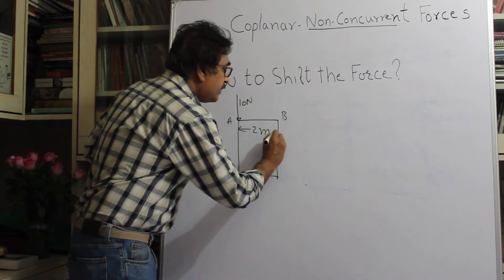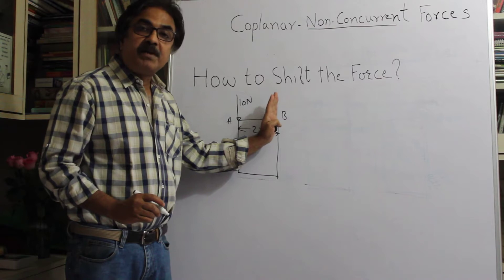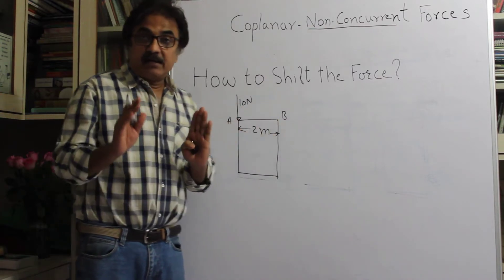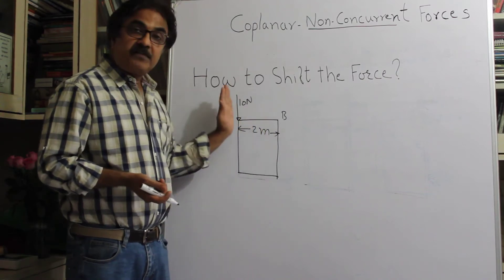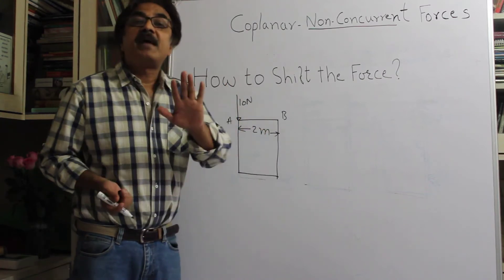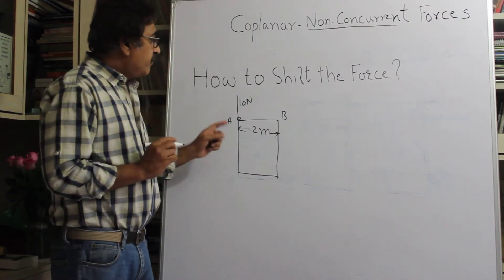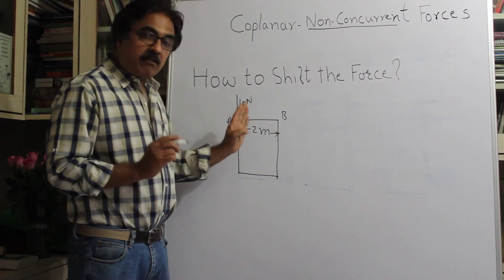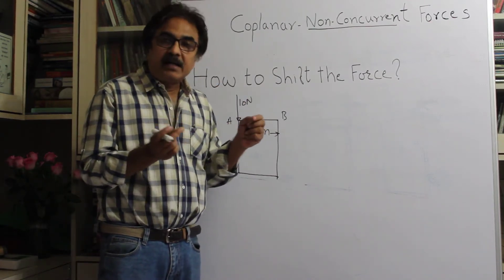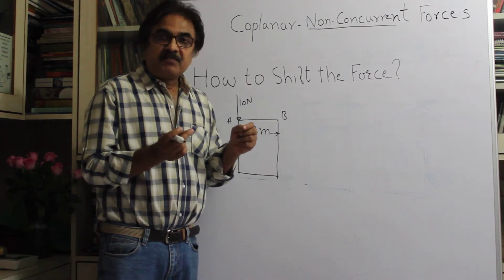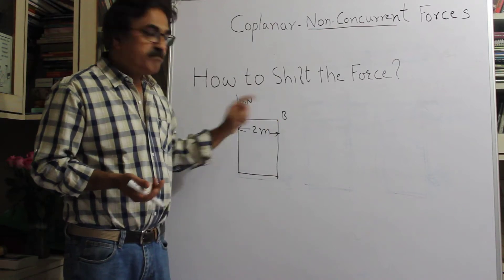Let's say this is point A and this is point B, and the width is 2 meters. We want to shift this force of 10 newtons to point B, but the effect of this 10 newtons on the body should remain the same. To do that, we introduce two forces that cancel each other — opposite in direction, equal in magnitude of 10 newtons — applied at point B.